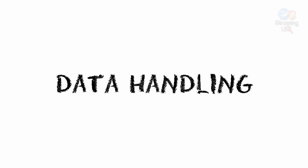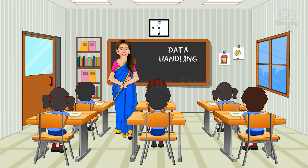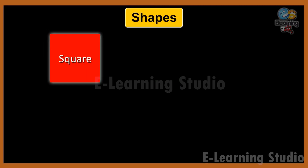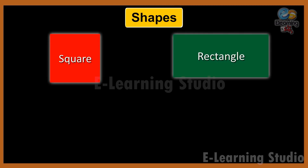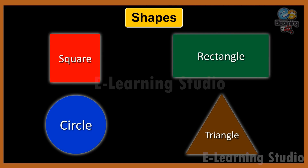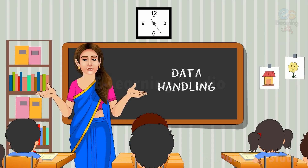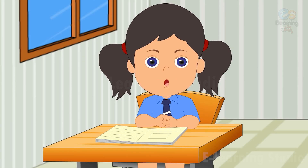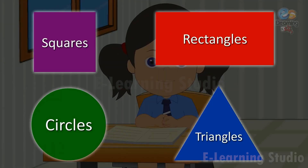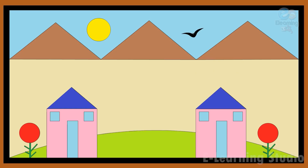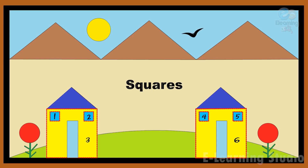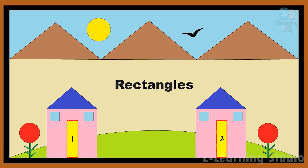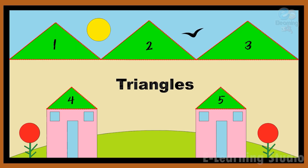Data Handling. Hello children, come. Let us recall some simple shapes — a square, a rectangle, a circle, and a triangle. Now look at this picture carefully. Can you identify the simple shapes in it? It has some squares, rectangles, circles, and triangles. Let us count: there are six squares, two rectangles, three circles, and five triangles.